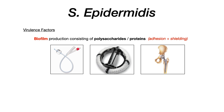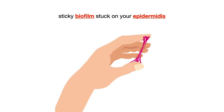The mnemonic to remember this goes back to the hands and the epidermis on your hands and fingers. Think about getting something really sticky stuck to your hands and fingers. That sticky biofilm stuck on your epidermis — your epidermidis — something sticky on your hands and fingers reminds you of epidermidis being sticky, causing biofilms, being part of the normal skin flora. And for that reason, if someone does not maintain good hygiene and touches a device, you can get a device-associated infection.